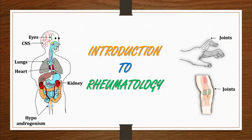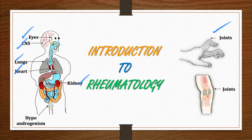Hello friends, welcome back. Today you are watching a new video from the Rheumatology Series with MMS — that makes medicine simple. Medicine is fun if you make it simple. Rheumatic disease not only affects your joints but also affects your vital organs like your eyes, brain, lungs, heart, kidney, and sometimes also causes hypoandrogenism.